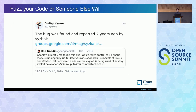Another reason you should fuzz your code is because it's a technique that bad guys could use too. The saying is: fuzz your code or someone else will. For example, a fuzzing tool released by Google called Syscaller found a bug in the Linux kernel, and this bug was later found to be used by the NSO group to target Android users. The vulnerabilities that fuzzing can find are particularly low-hanging fruit for bad actors and can be weaponized in many cases.